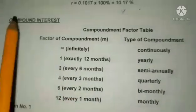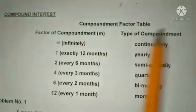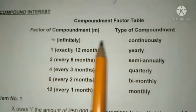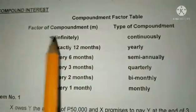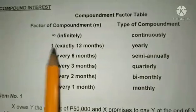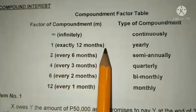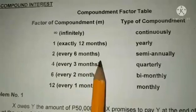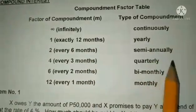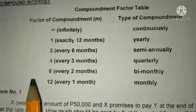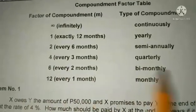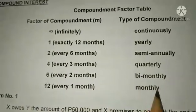When solving compound interest, we have a compoundment factor table. M is the factor of compoundment indicating the type: infinity for continuously, 1 for yearly (every 12 months), 2 for semi-annually (every 6 months), 4 for quarterly (every 3 months), 6 for bimonthly (every 2 months), and 12 for monthly (every 1 month).